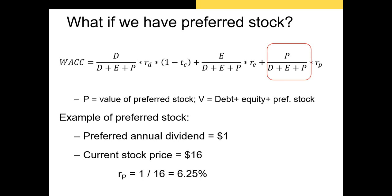Some firms issue preferred stock to raise capital. If that's the case, we need to include the weight and cost of preferred stock in our WACC equation. We do this by including P — the total value of the preferred stock — in the denominator for all of our weights. We calculate the weight of the preferred stock by dividing its total value by the total amount of capital raised: debt plus equity plus preferred stock. The cost of preferred stock is the annual return, calculated as the dividend divided by the price. For example, if preferred stock has an annual dividend of $1 and a current share price of $16, using the perpetuity formula: 1 divided by 16 gives us a 6.25% return.